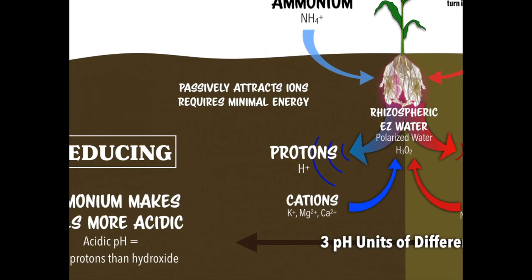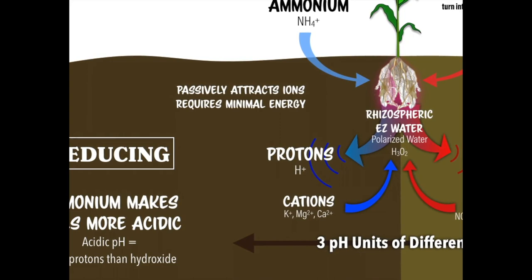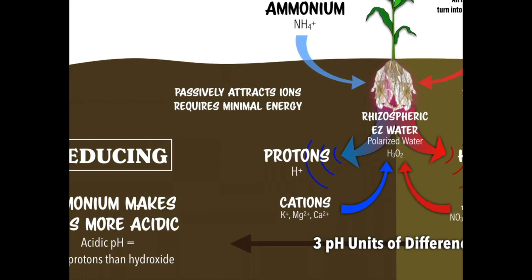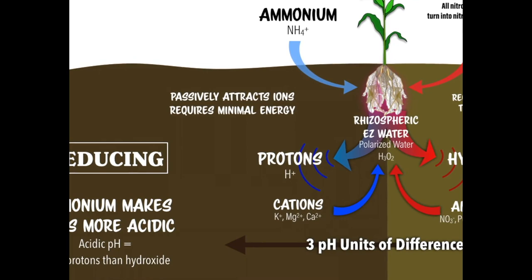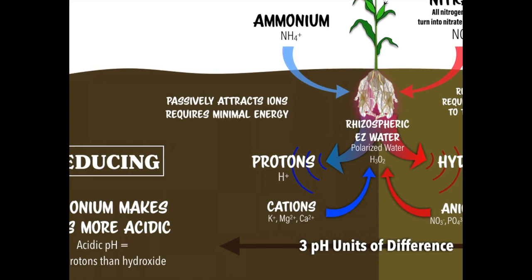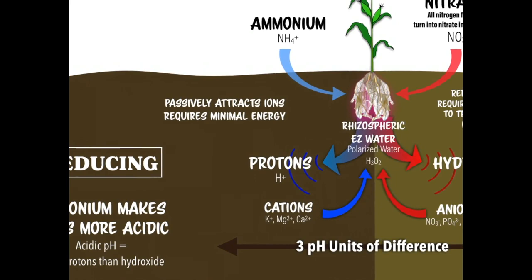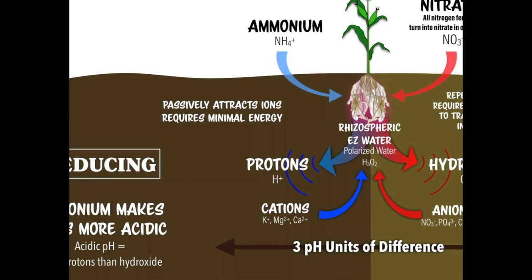Ammonium not only acidifies the soil, it acidifies the plant, and then the plant releases protons in response — a feedback loop that can get out of control. That's why soil organic matter is so critical to have high in your soil. It can buffer against changes in EH and pH, and microbiology can embody that nitrogen so it gets released at the timing and preference of the plant.